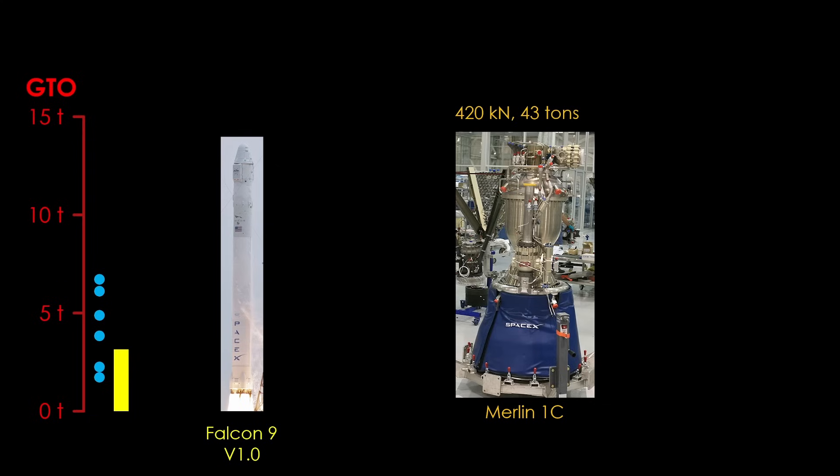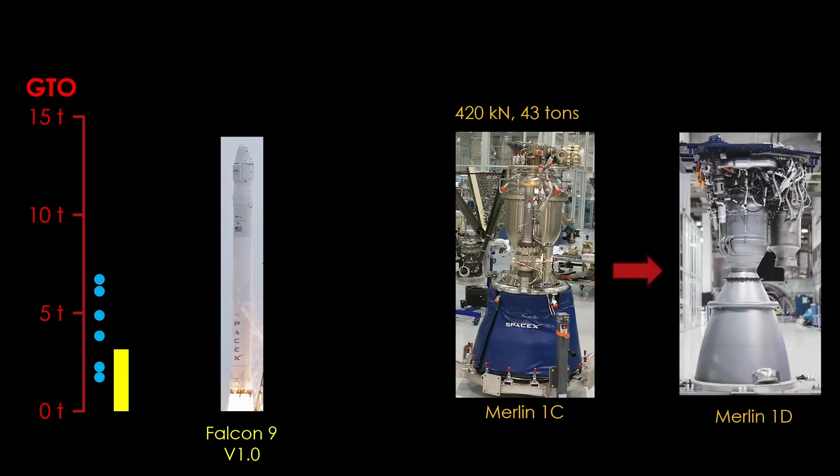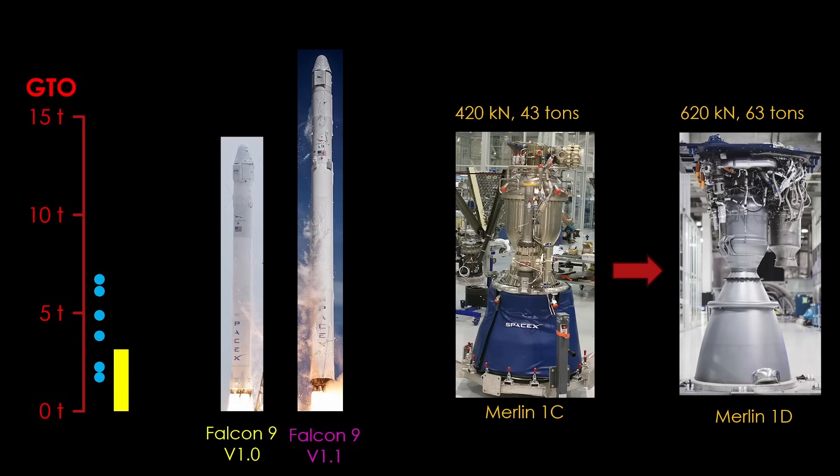But the Merlin team wasn't finished, and they soon coughed up a new version, the Merlin 1D. It pushed the thrust up to 620 kilonewtons, or 63 tons. Pretty much a 50 percent increase. More thrust means you can lift a bigger rocket, and the Falcon 9 version 1.1 was 40 percent taller and 50 percent heavier. That upsize pushed the GTO payload up to 4.9 tons, an increase that actually made it reasonable for SpaceX to start flying some of the smaller geosynchronous communication satellites, and to start working seriously on reuse.